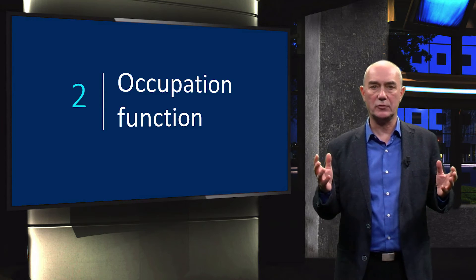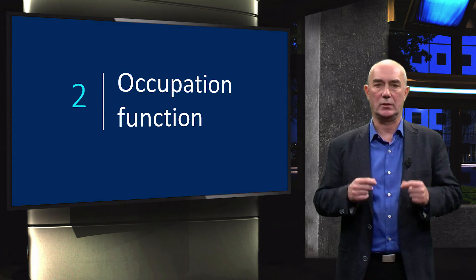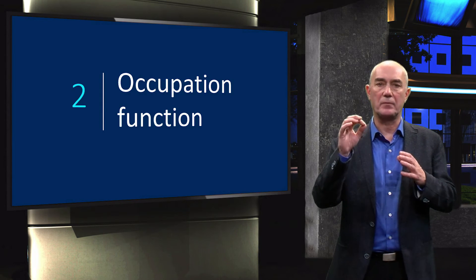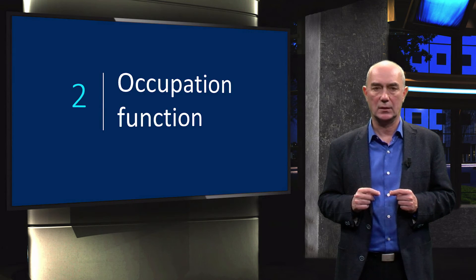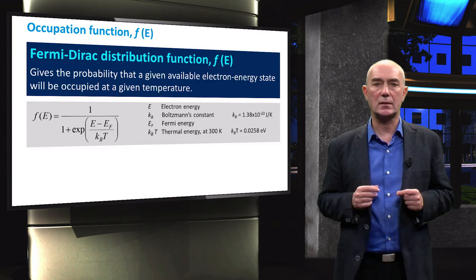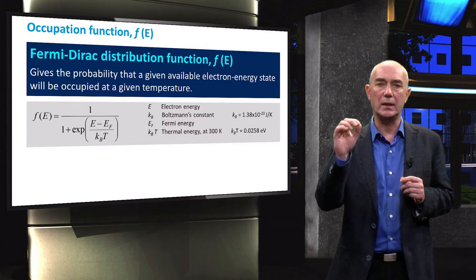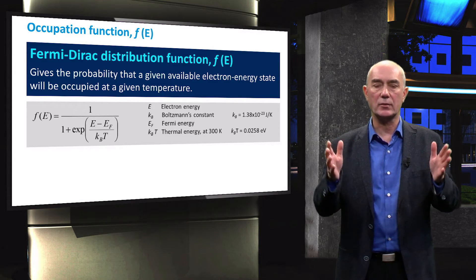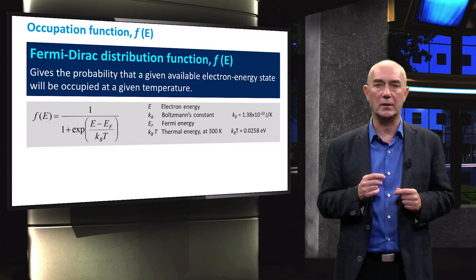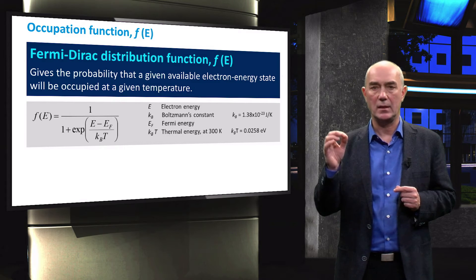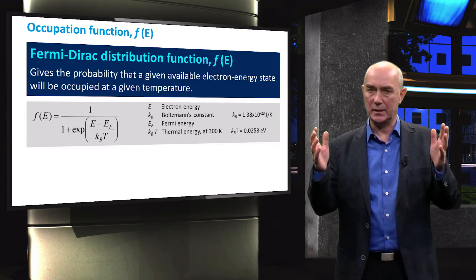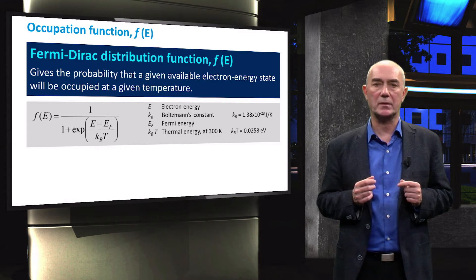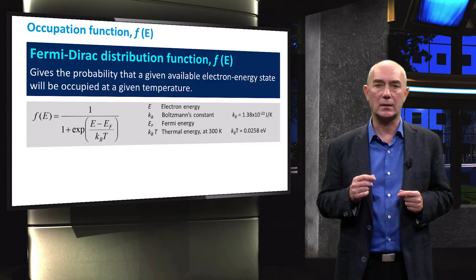For this purpose we introduce what is called the occupation function. This function is known as the Fermi-Dirac distribution function. The Fermi-Dirac distribution function expresses the probability that an available energy state will be occupied at a certain temperature. This function depends on the difference between the energy level of interest and the so-called Fermi level. I will explain the definition of the Fermi level in a couple of slides, but let's first take a look at the temperature dependence of this distribution function.